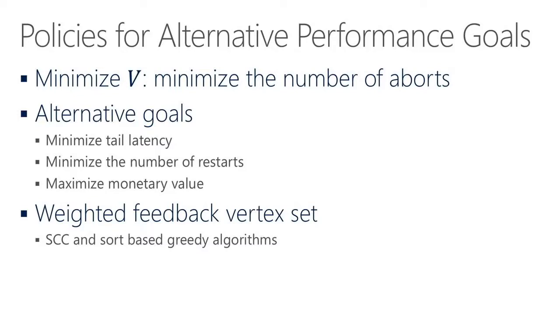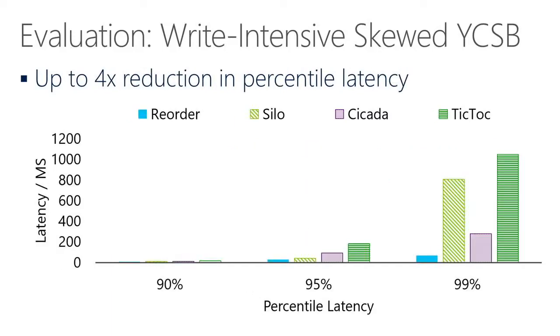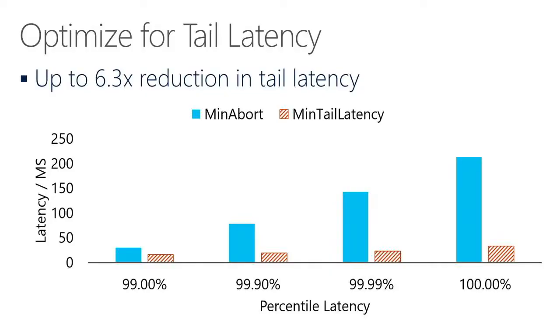There are extensions where you can optimize for different goals. Instead of just minimizing number of aborts, you can reduce tail latency, or prioritize transactions with higher value. This can all be handled under the same framework. In terms of performance numbers, we achieve up to two times improvement in throughput and up to four times reduction in tail latency. The new policy targeting very tail latency — like 99th, 99.9th, 99.99th percentile — can reduce that by up to six times.